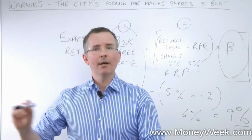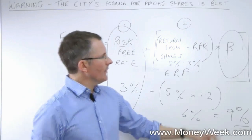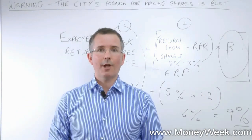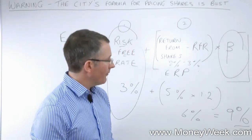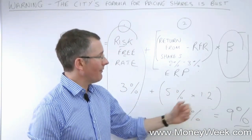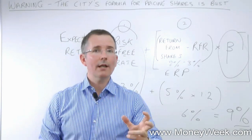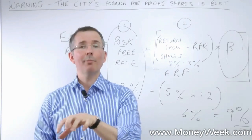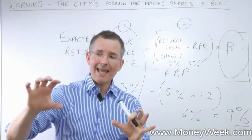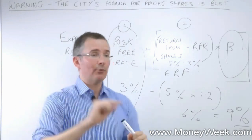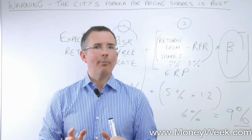That just leaves beta — and really the model's already blown by the time you get to beta. Beta simply captures what a stock does versus what the wider market does. If the stock market goes up 10% and Tesco goes up 12%, the beta is 1.2. Another stock might have a beta of 2, or as low as 0.5. Beta is an attempt to gauge the relative volatility of a particular stock compared to the wider market.